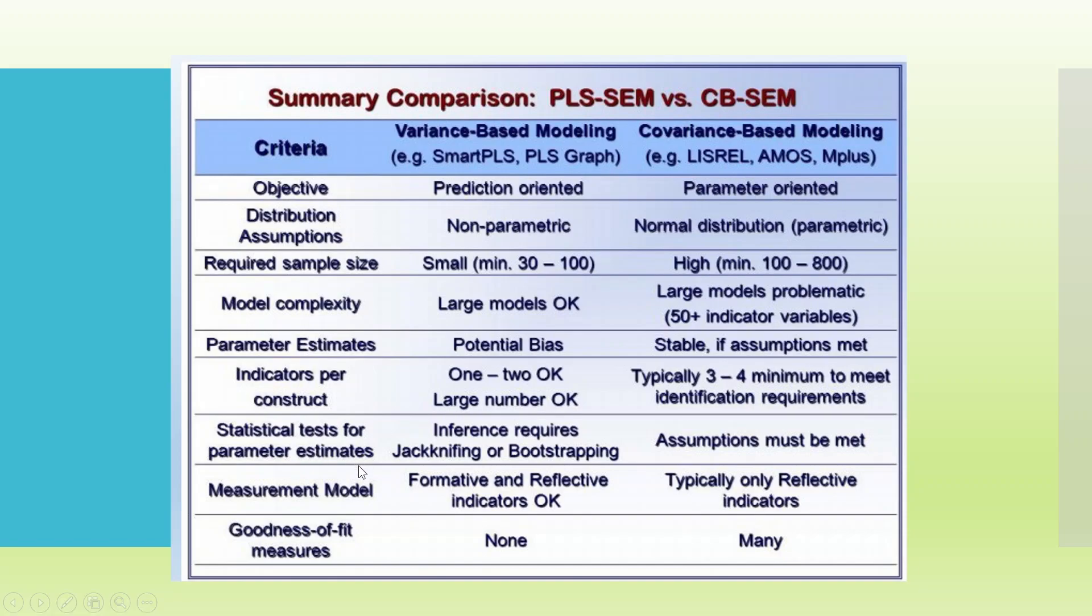Statistical test for parameter estimates: it uses jackknifing or bootstrapping. Here, the assumptions must be met. In case of measurement model, AMOS can only work on reflective indicators, while Smart PLS can work on formative and reflective indicators also. Goodness of fit—that is, model fit—we are having too many model fit measures in AMOS, Lisrel, or Mplus. If you talk about Smart PLS, it is still in a developing stage and therefore we are having fewer measures of goodness of fit.